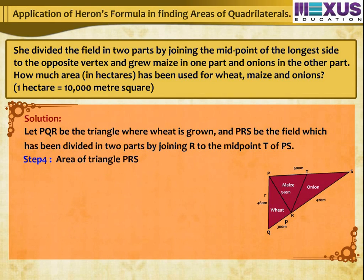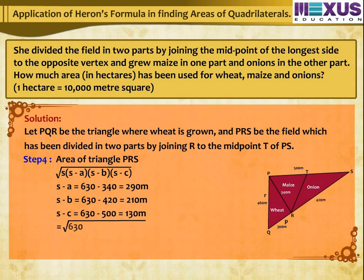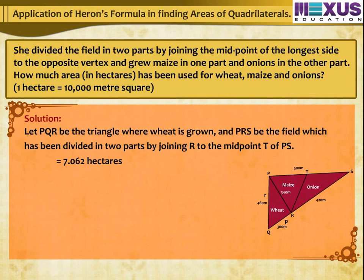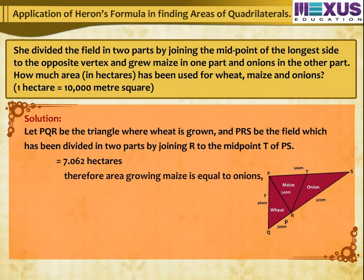Step 4: Area of triangle PRS = √(630 × 290 × 210 × 130) = 2,100√1,131 m² = 0.21√1,131 hectares ≈ 7.062 hectares. Since R divides PS into 2 equal parts with midpoint T, PT = ST, and they have equal height. Therefore, area for maize = area for onions = 7.062 ÷ 2 = 3.531 hectares.